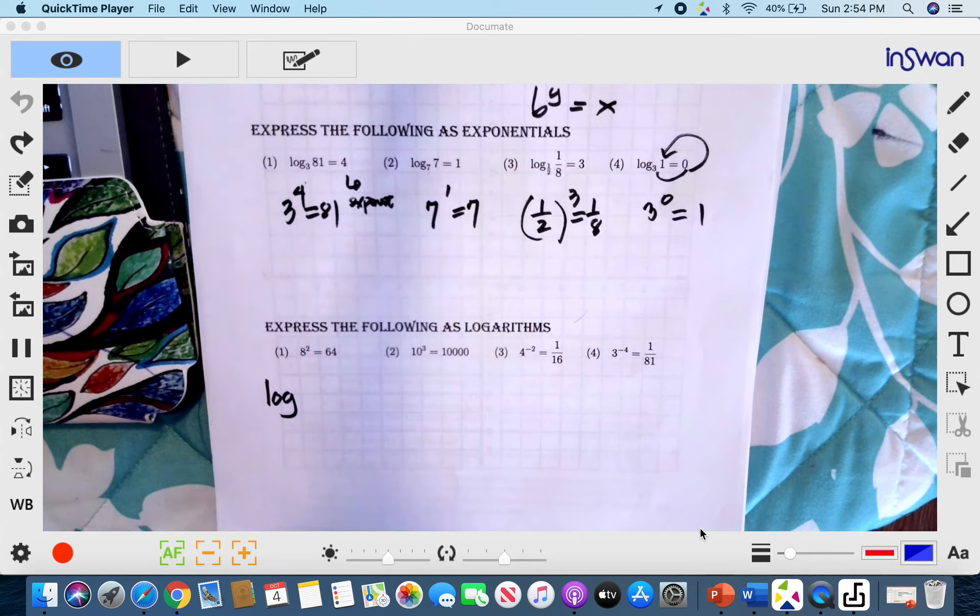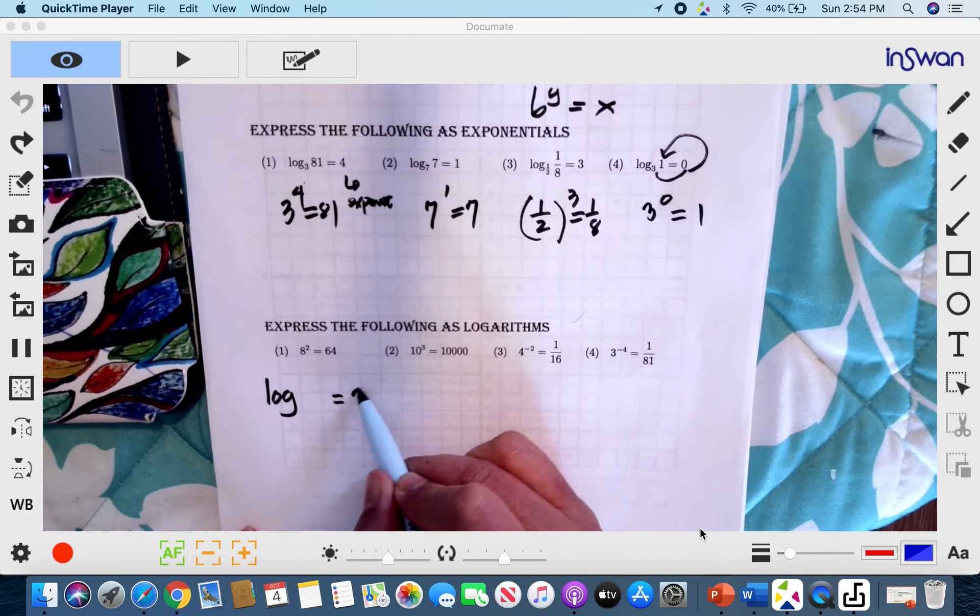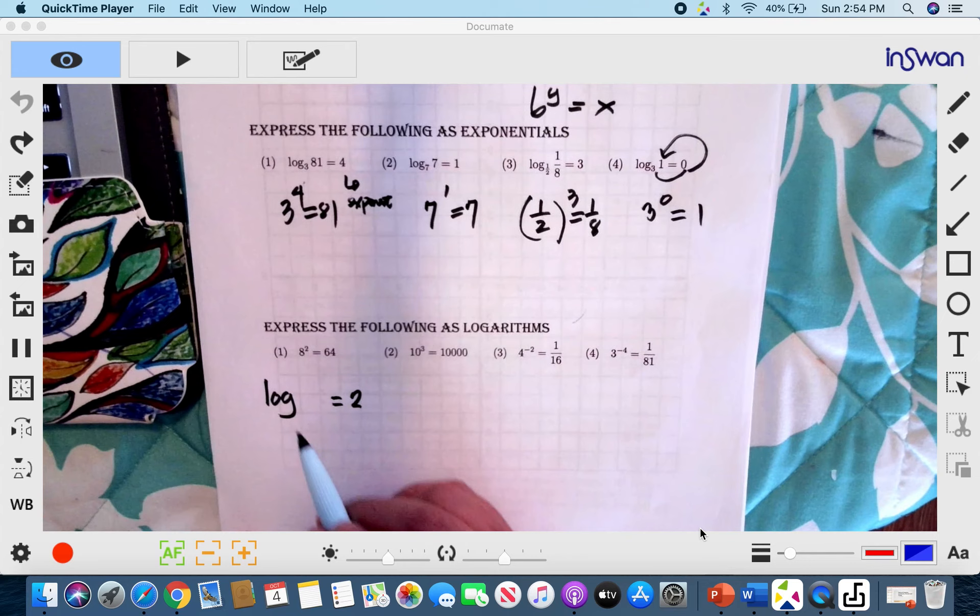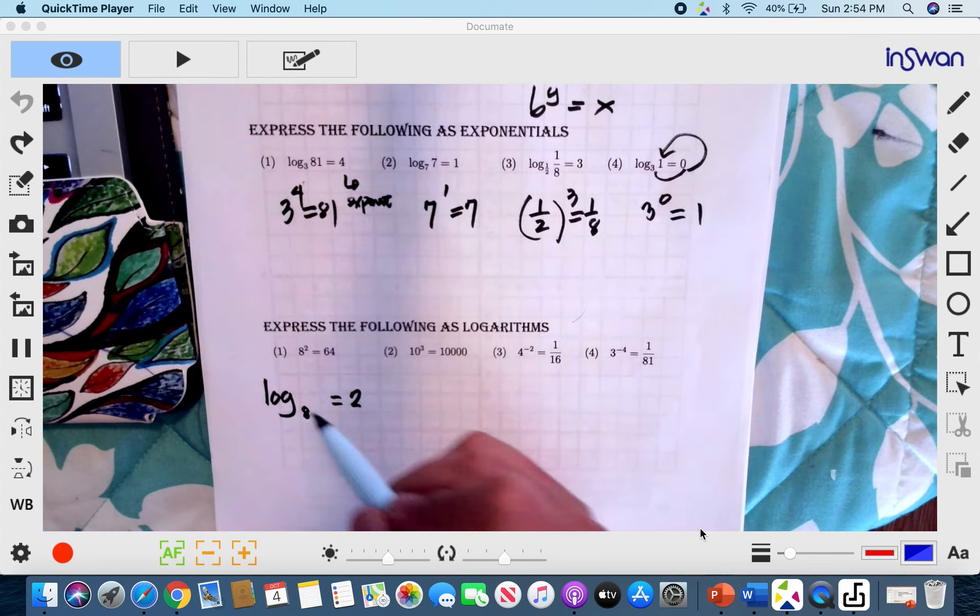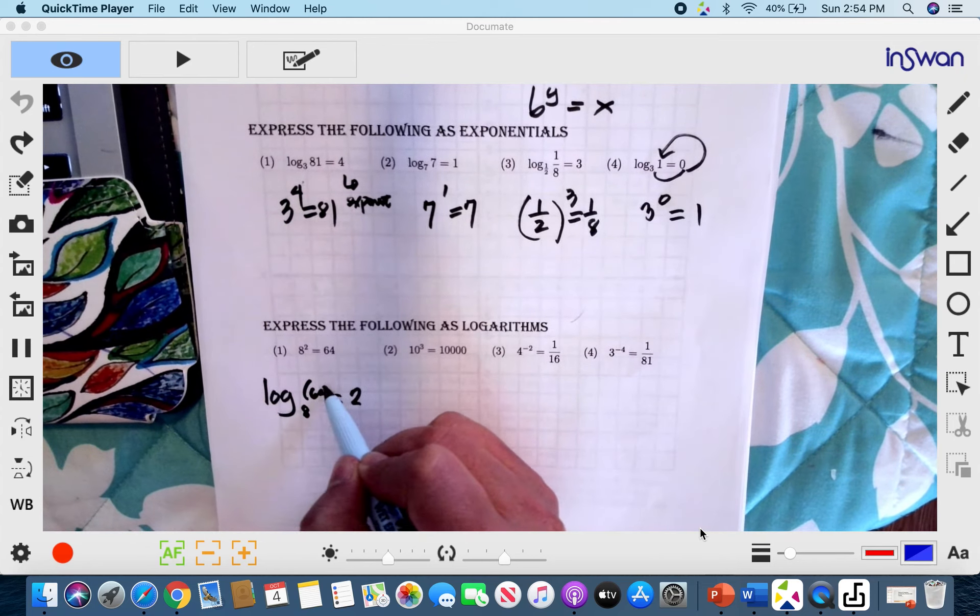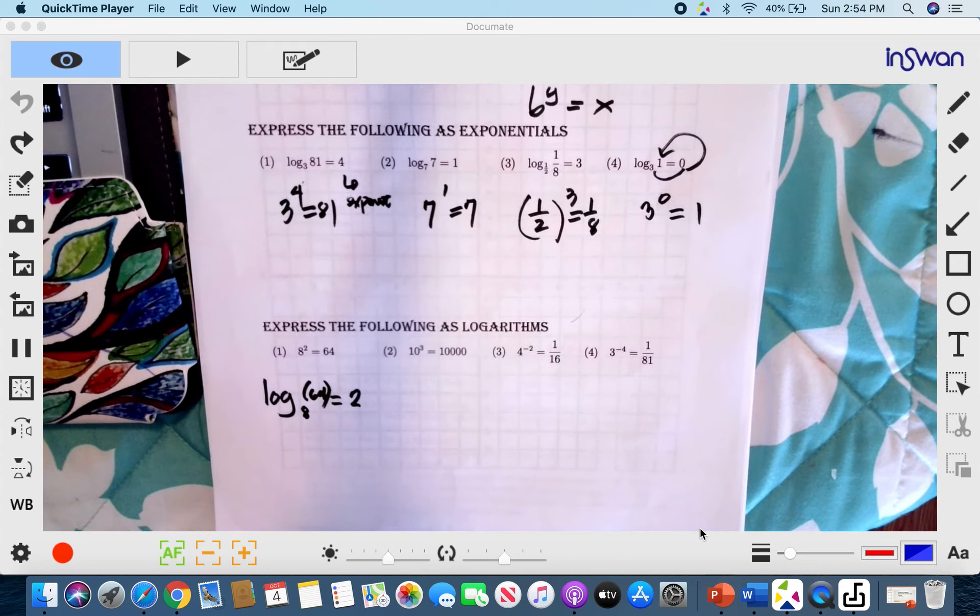The exponent here is 2. So therefore, the equation is equal to 2. And your base is 8. It's going to be written like smaller than the usual. And this is your 64, which is your power.